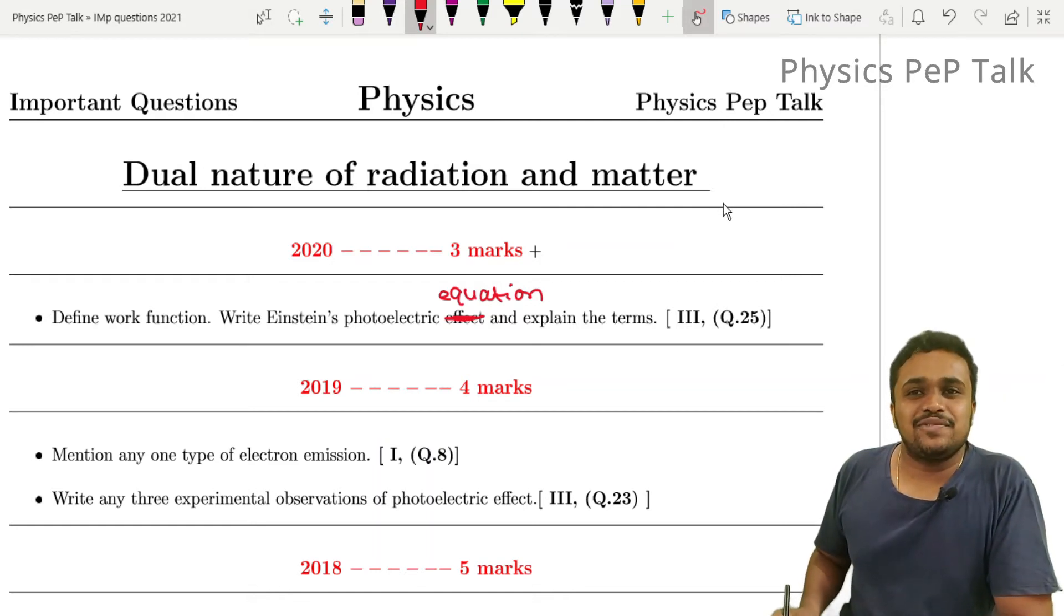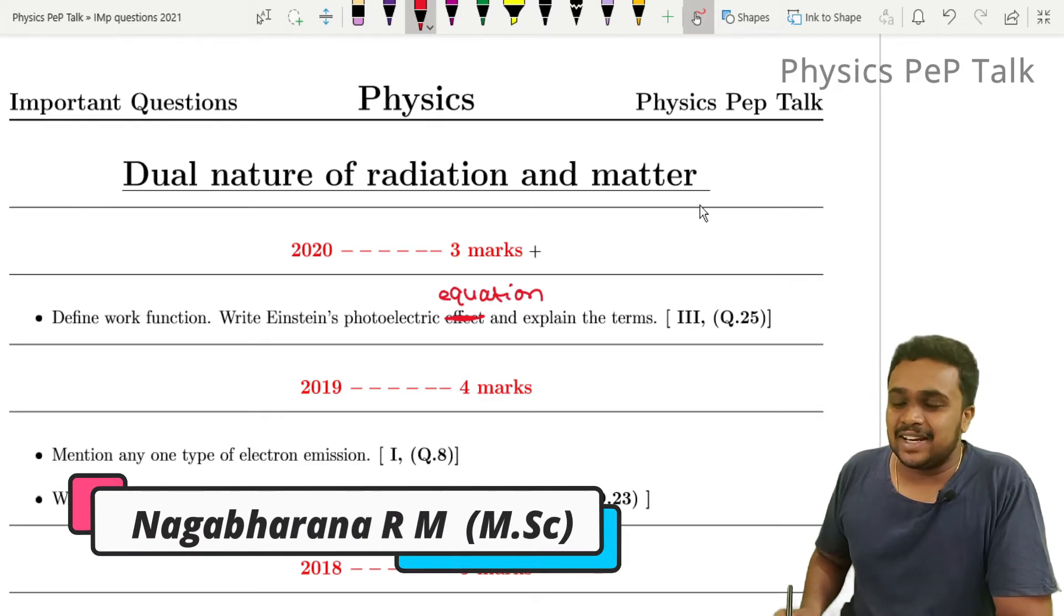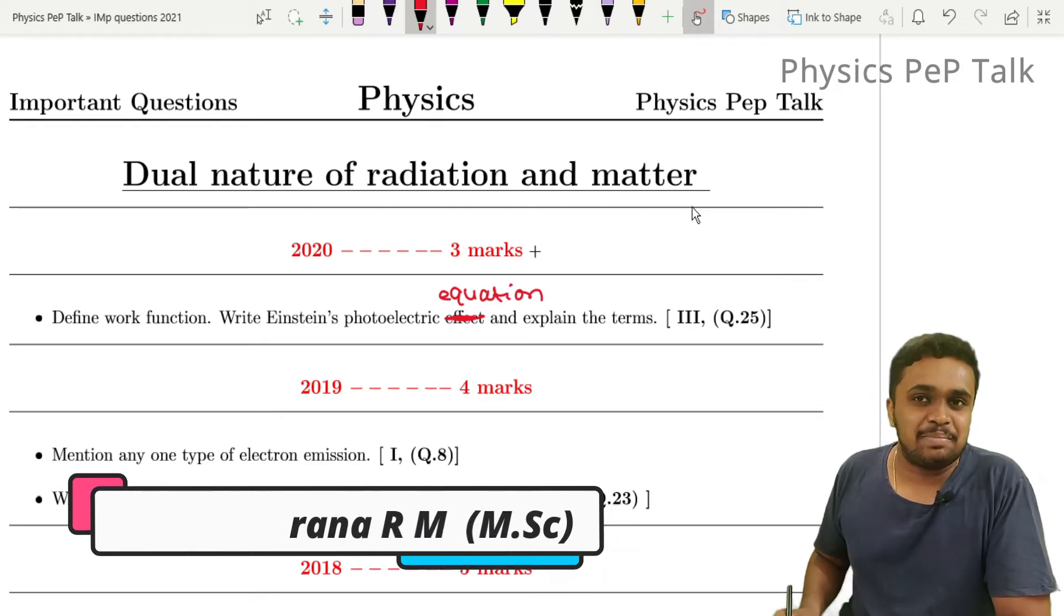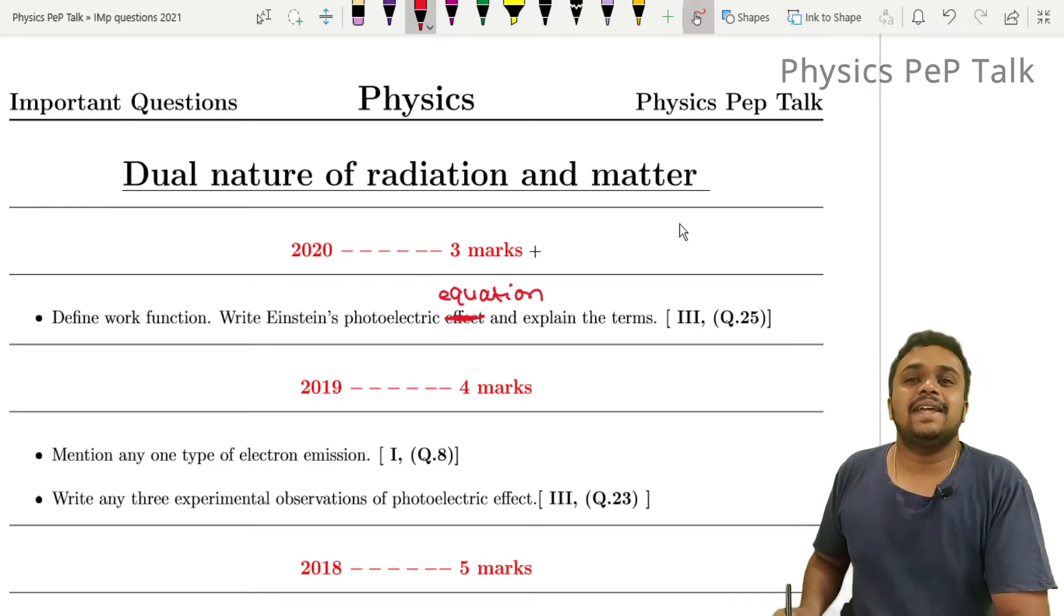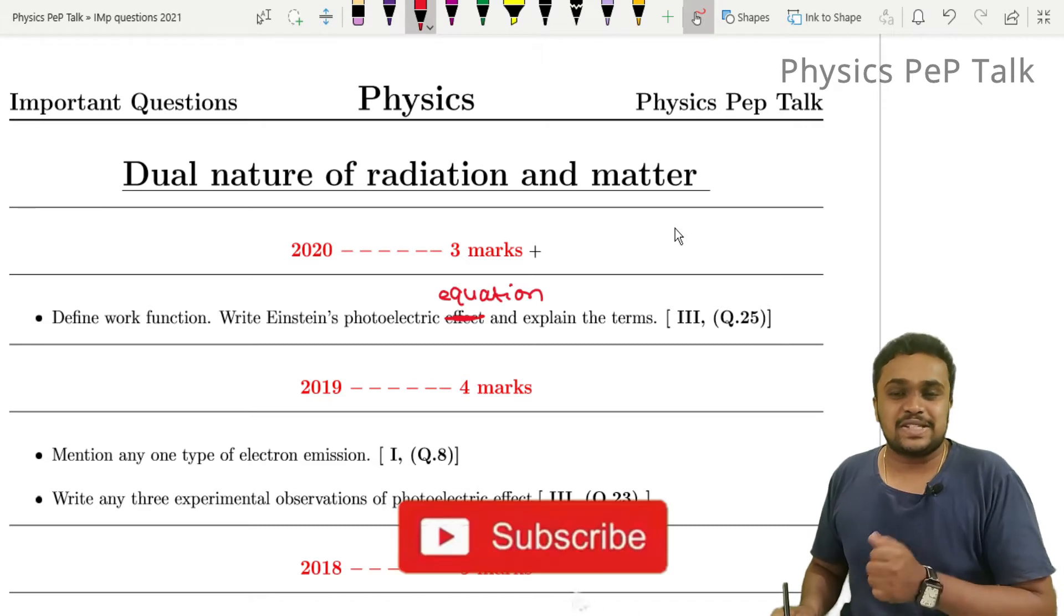Hello students and welcome to Physics PeP Talk. In this video, we will discuss the dual nature of radiation and matter chapter in the last three years. This is an important question. How do we prepare for this year? And lastly, must-read topics from this chapter.